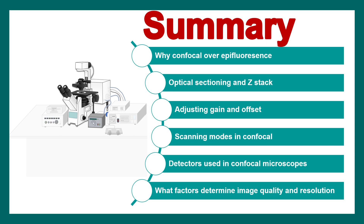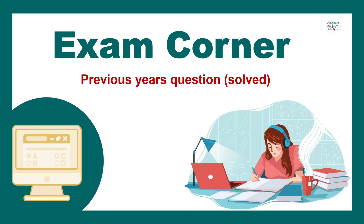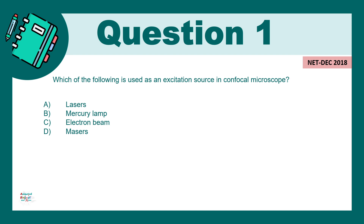Confocal microscopy also has disadvantages: it is very costly, and even with confocal, fluorophores deeper than 100–200 micrometers cannot be imaged well because image quality degrades with depth due to scattering. These problems are addressed by two-photon microscopy, which will be covered in the next lecture.